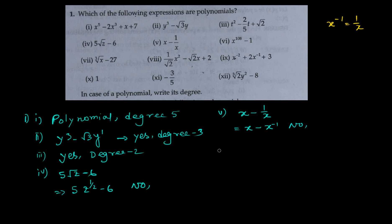The sixth one is x to the power 108 minus 1. Obviously it's a polynomial, and the degree will be the highest power — in this case, 108.